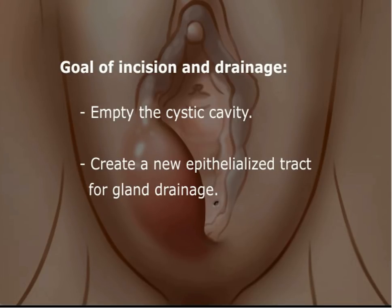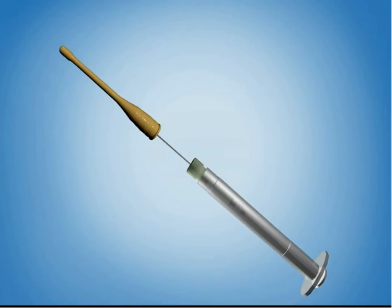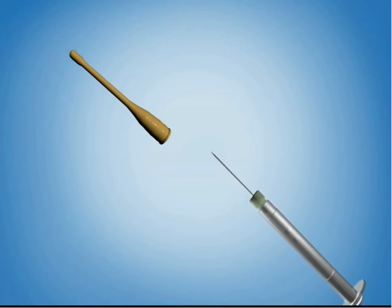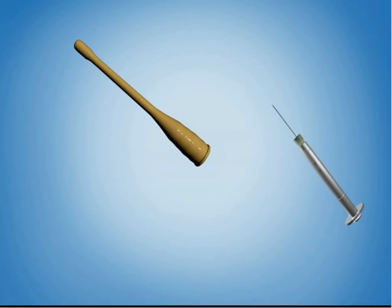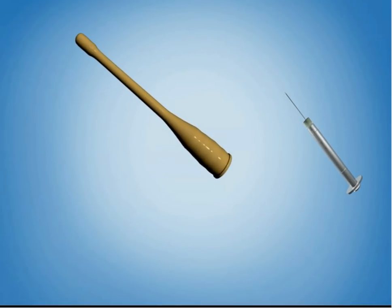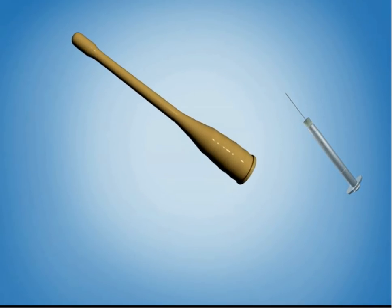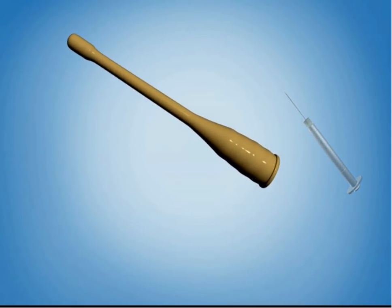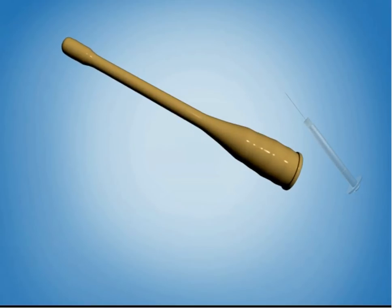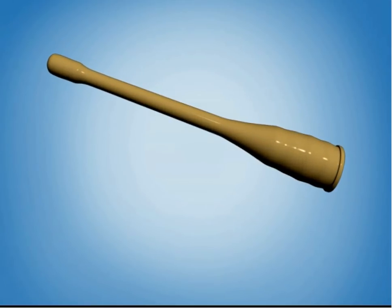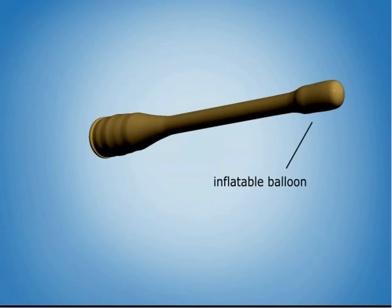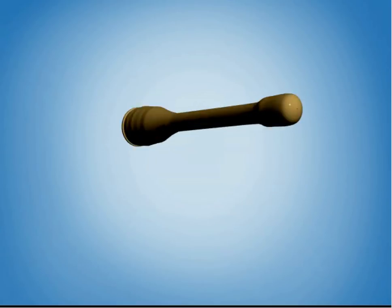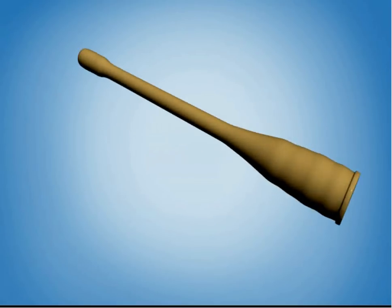For this purpose, a word catheter is used. This catheter appears similar to a very small Foley catheter. It is constructed of a 1-inch latex tube stem that has an inflatable balloon at one end and a saline injection port at the other.